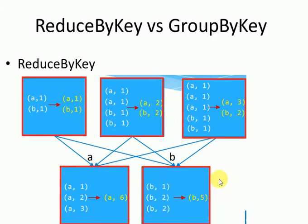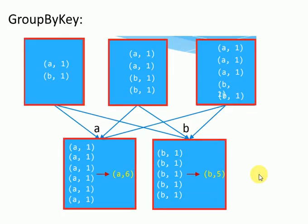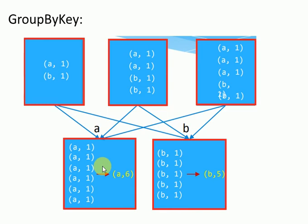This is reduceByKey — it aggregates all values associated with a key, where this is the key and this is the value. Now groupByKey creates a new pair. In set one: (a,1), (b,1); set two: (a,1), (a,1), (b,1), (b,1); similarly set three. In set four, all values of a are grouped together: (a, [1,1,1,1,1]). The final output is (a,6) and (b,5). This is the major difference between reduceByKey and groupByKey.